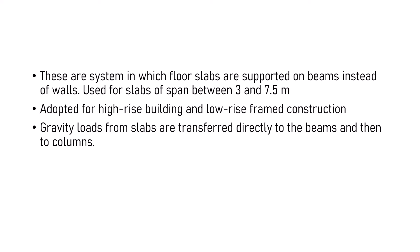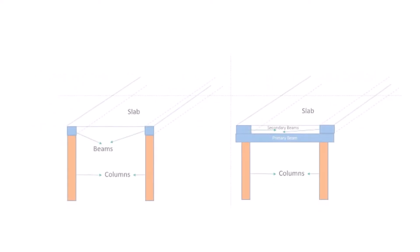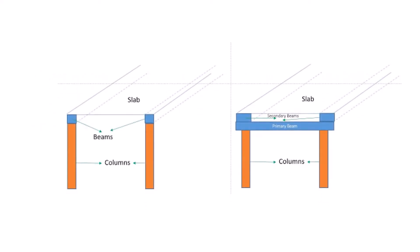An important note: when the beams are directly connected to the columns in the vertical frame, those beams are called primary beams or girders. When the beams supporting the slabs are not supported directly by a column but by other primary beams, those beams are called secondary beams, as shown in the figure.